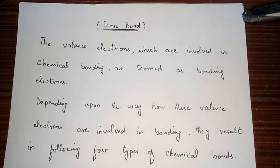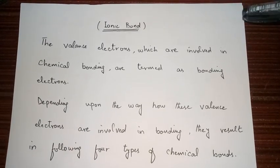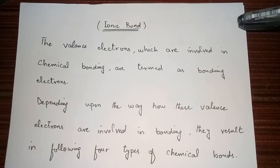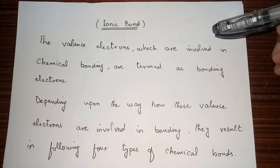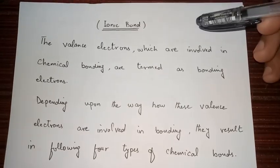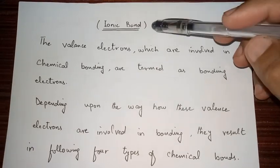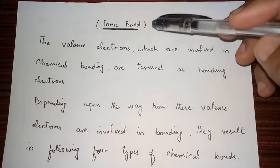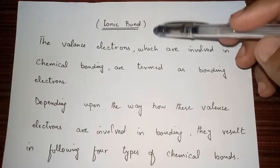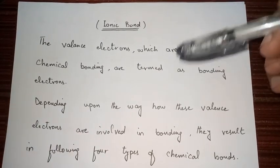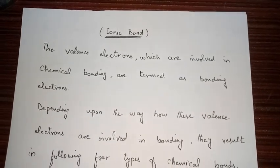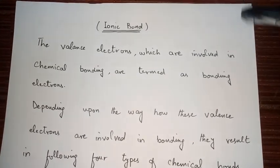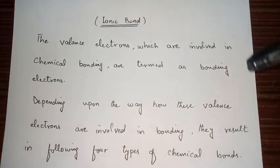Assalamu alaykum everyone. Today we are going to study the type of chemical bond which is known as ionic bond. We will discuss ionic bond in detail and go through some examples of the ionic bond.